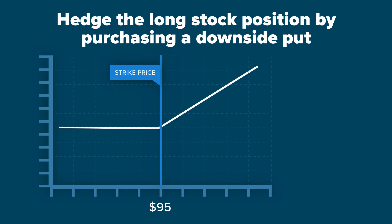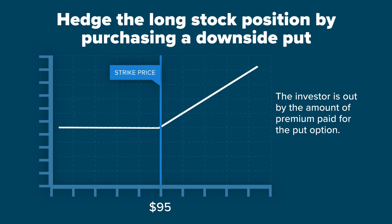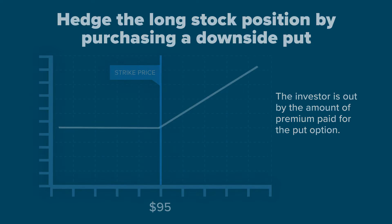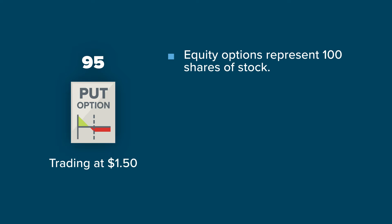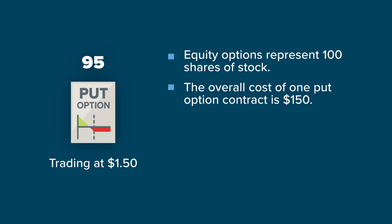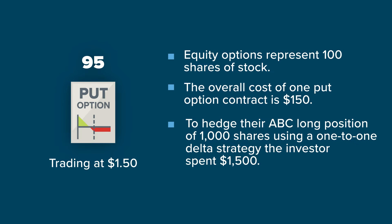The loss is limited to ABC stock trading at or below the strike price of 95 minus the premium paid. No matter how low the stock goes prior to expiration, the investor is protected from further losses. However, if the stock stays above the put strike up to expiration, the investor is out by the amount of the premium paid for the put option. Assuming the 95 put contract is trading at $1.50, and since equity options represent 100 shares of stock, the overall cost of one put option contract is $150. To hedge their ABC long position of 1,000 shares using a one-to-one delta strategy, the investor spends $1,500.